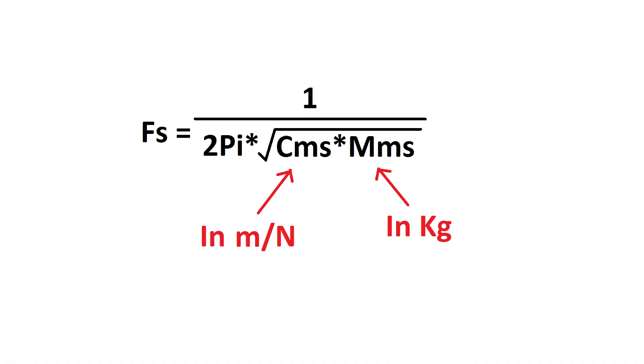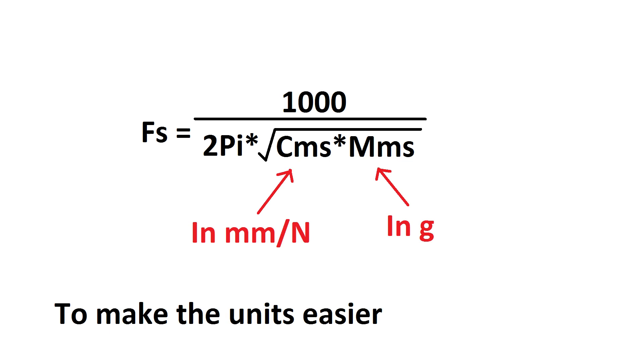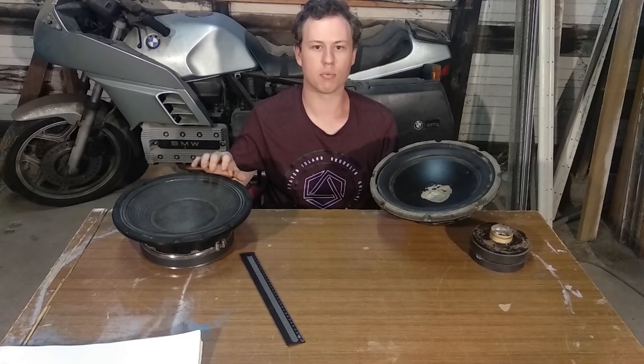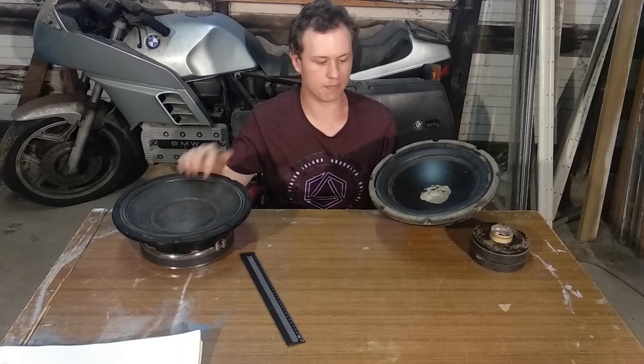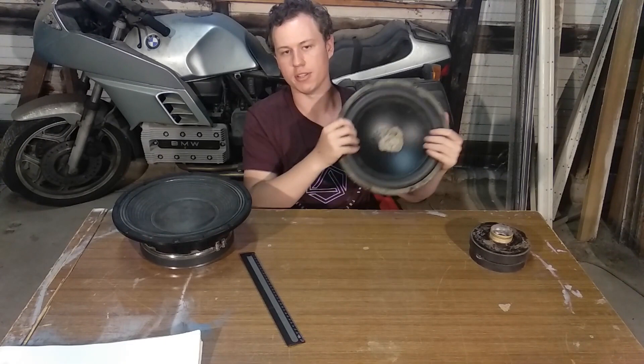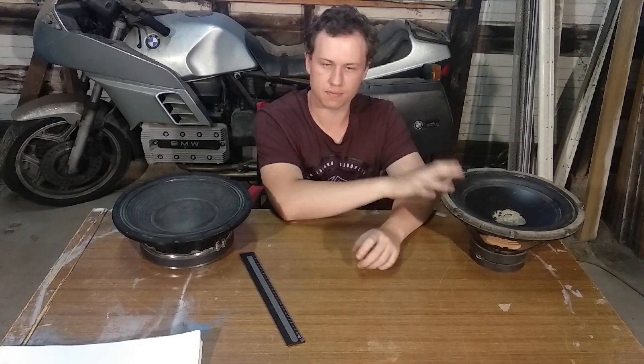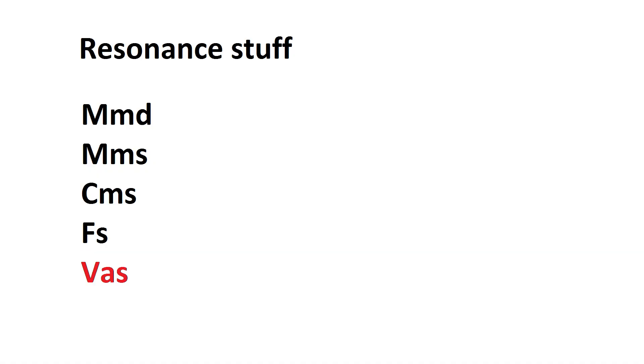Next we have FS, the resonance frequency of the driver. The resonance frequency is determined by MMS and CMS. Heavier diaphragms have a lower resonance; lighter ones have a higher resonance. Stiffer diaphragms have a higher resonance and looser ones a lower resonance. This softer driver is designed to operate better at lower frequencies, below 50Hz, while the PA driver is stiffer. MMS and CMS together are responsible for FS.